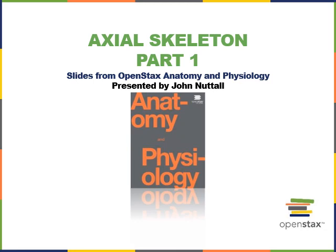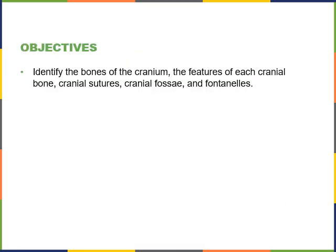This video will cover part one of the axial skeleton. As we go, we'll cover the following study objectives: identify the bones of the cranium, the features of each cranial bone, cranial sutures, cranial fossae, and the fontanelles.